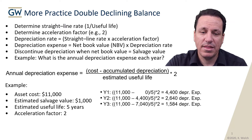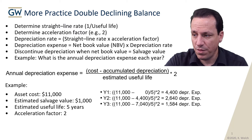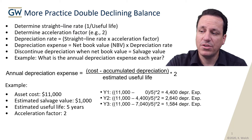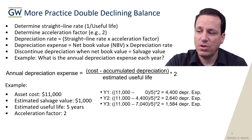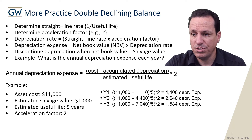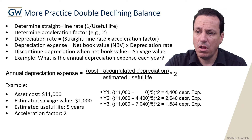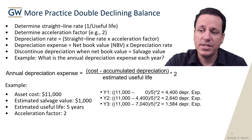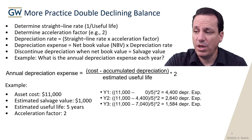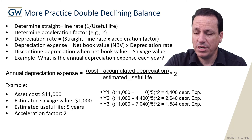In year three, we add the prior depreciation in accumulated depreciation of $4,400 and $2,640. We add those together and get $7,040 in accumulated depreciation. We take $11,000 minus the accumulated depreciation, divided by five times two, and we get $1,584 in depreciation expense.